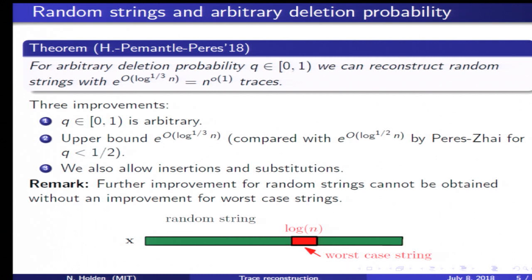There's one interesting remark to make about the upper bound we obtain. This is the best possible upper bound we can get without also improving the upper bound for worst-case strings. The case of worst-case strings and random strings are closely related.